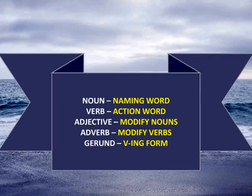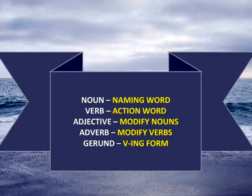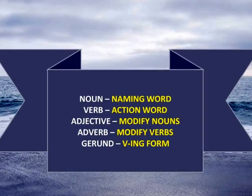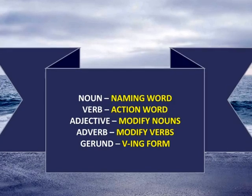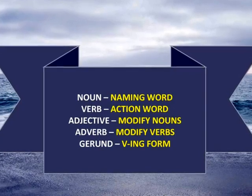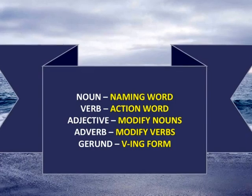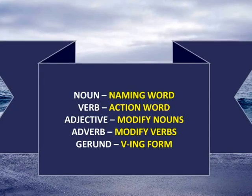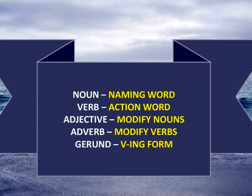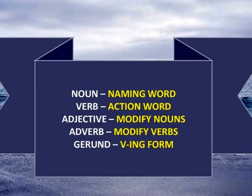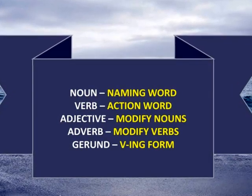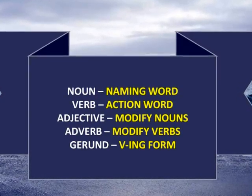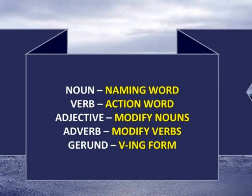A noun is a naming word used to identify any class of people, place, or thing — 'pairchol' in Tamil. A verb is an action word used to describe an action, state, or recurrence — 'vinaychol' in Tamil. An adjective is a word that modifies a noun — 'pairadai' in Tamil. An adverb is a word that modifies a verb — 'vinay urichol' in Tamil. A gerund is a noun form of a verb, that is a verb in the form of '-ing' — 'tholir pair' in Tamil.